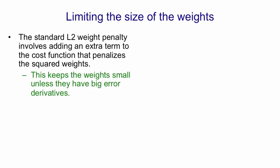This weight penalty keeps the weights small unless they have big error derivatives to counteract it. If you look at what the penalty term looks like, as the weight moves away from zero you get this parabolic cost.